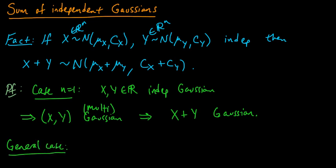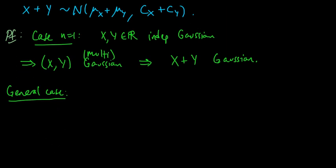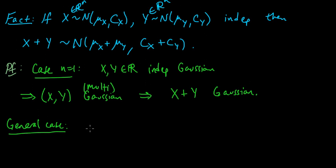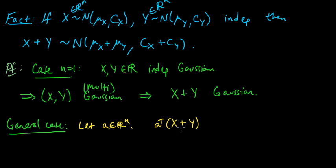Now let's do the general case. We have X and Y in ℝⁿ and we need to show X plus Y is multivariate Gaussian. To show it's multivariate Gaussian, we need to show that for any vector a in ℝⁿ, the dot product of a with X plus Y is univariate Gaussian. So we let a be some vector and multiply through to get a-transpose X plus a-transpose Y.